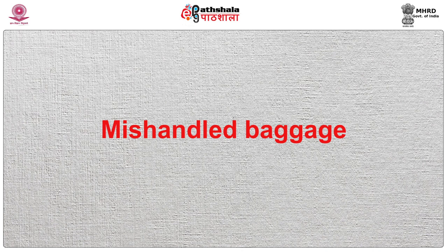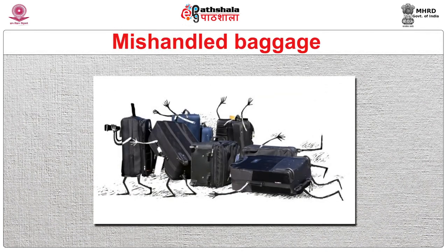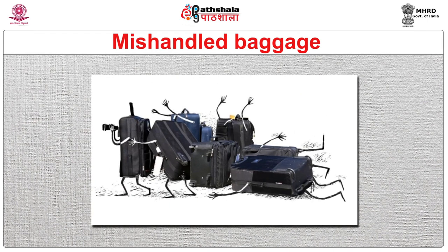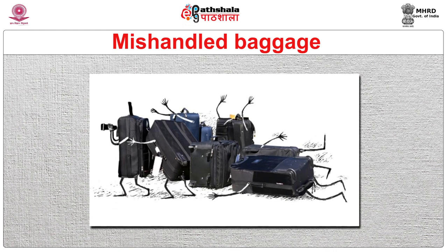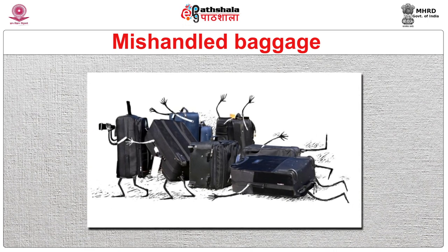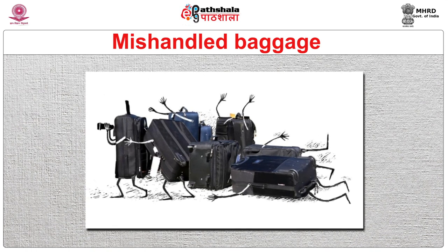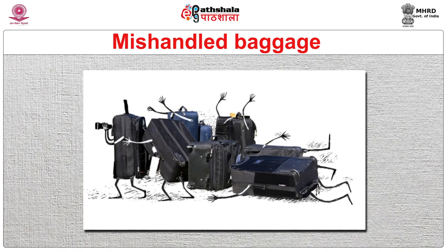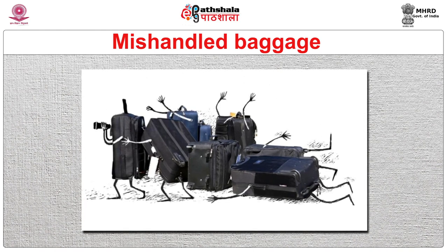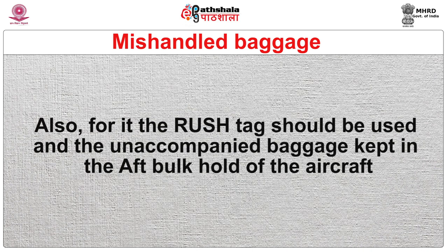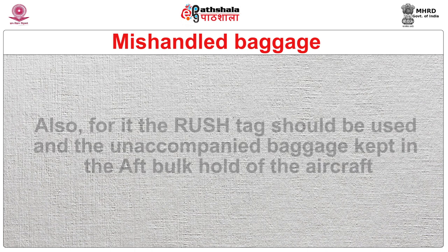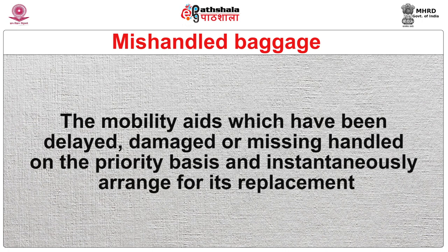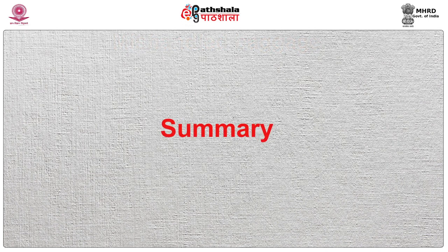In case of mishandled, unclaimed, or unidentified baggage, its details should be entered into the tracing system, kept in a safe area, and subjected to additional security controls before being loaded onto the aircraft, such as manual search, simulation chamber, X-ray, or vapor/trace analysis. A rush tag should be used, and unaccompanied baggage should be kept in the aft bulk hold of the aircraft. Mobility aids which have been delayed, damaged, or missing should be handled on a priority basis and immediately arranged for replacement.